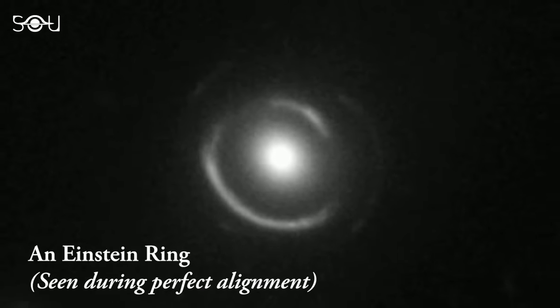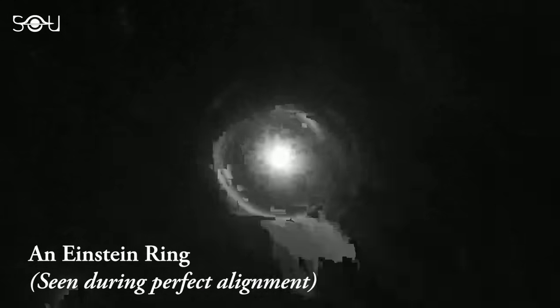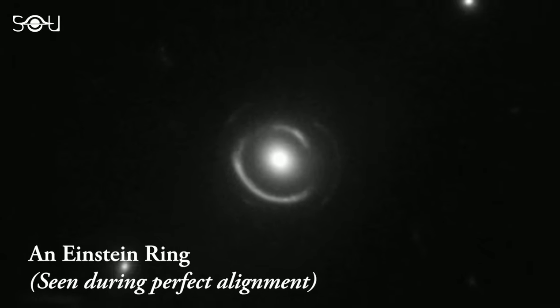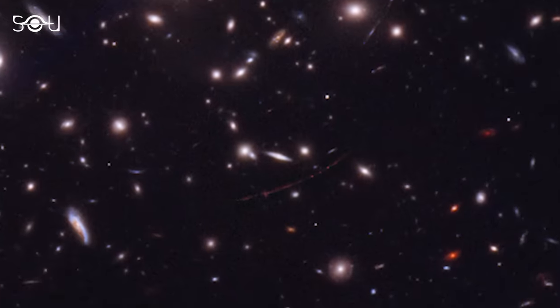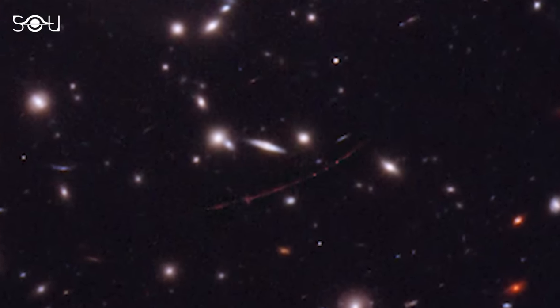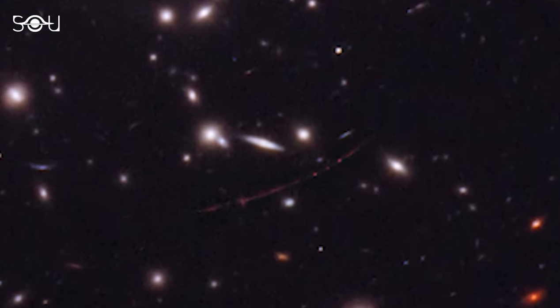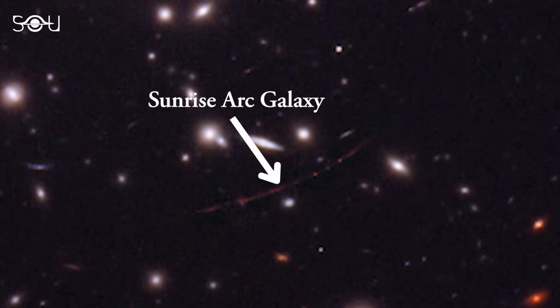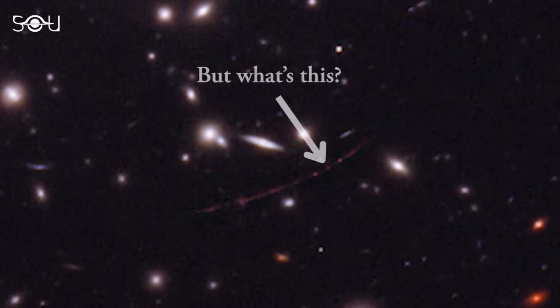Sometimes, if things line up just right, this can make the light from far-off stars look much brighter than it is. Because of this bending, called gravitational lensing, the galaxy where Earendel is looked like a bent line, which scientists named the Sunrise Arc. But they saw something very bright in that bent line or the arc.